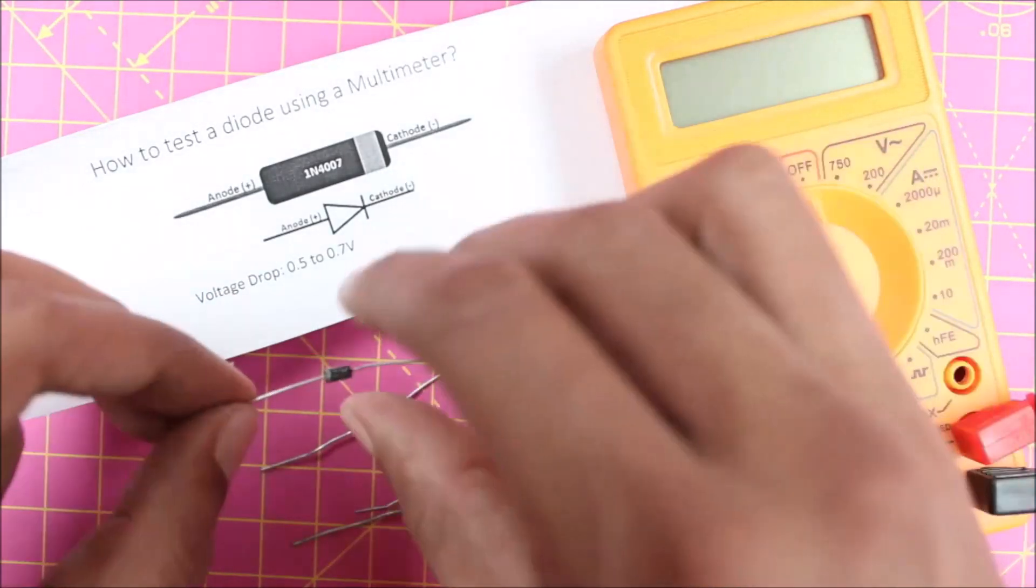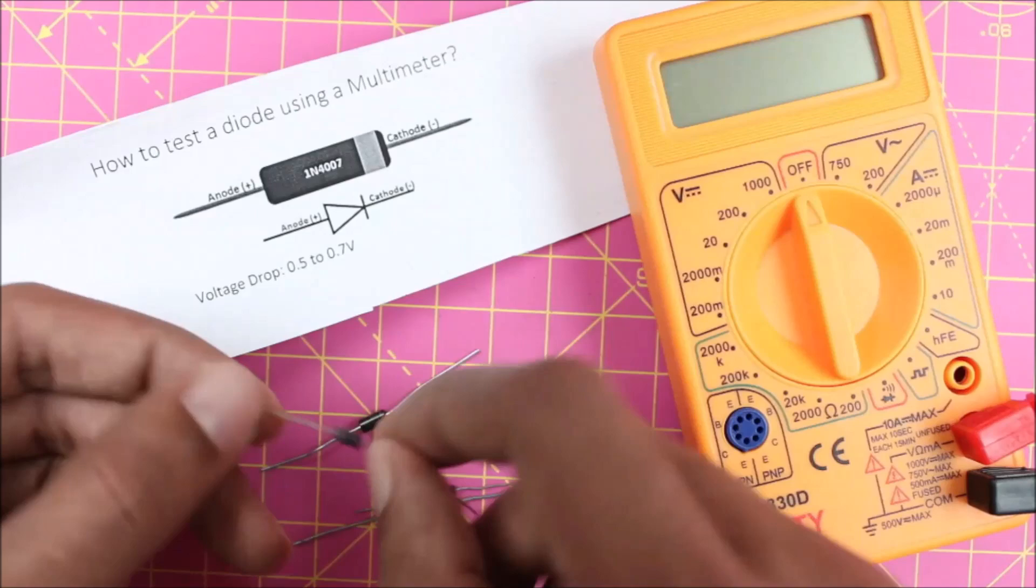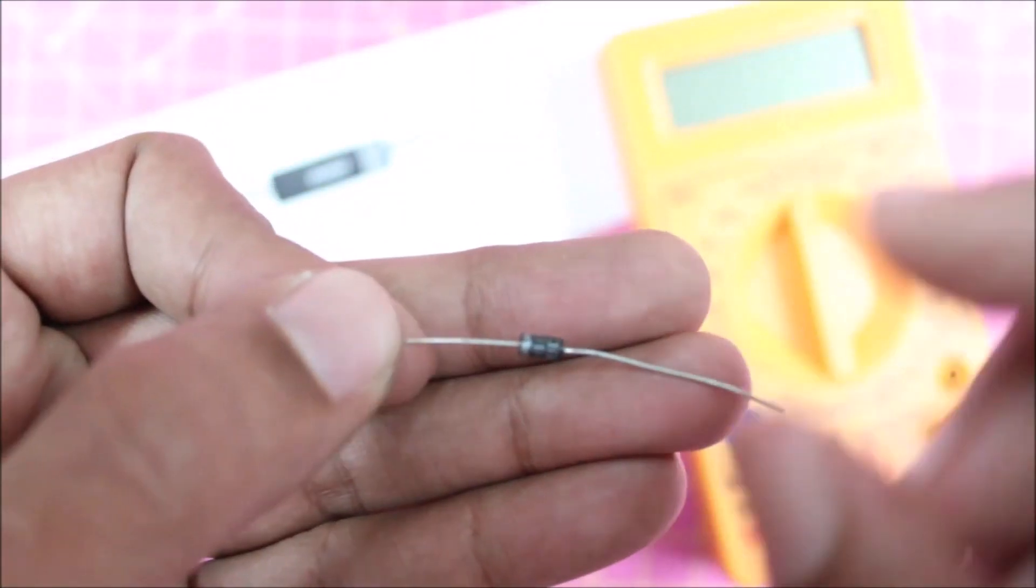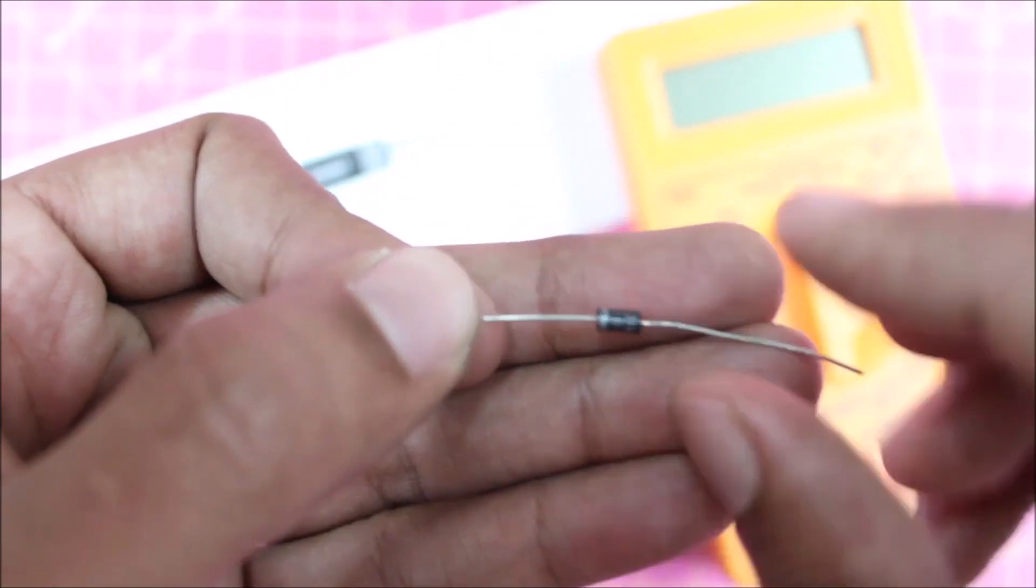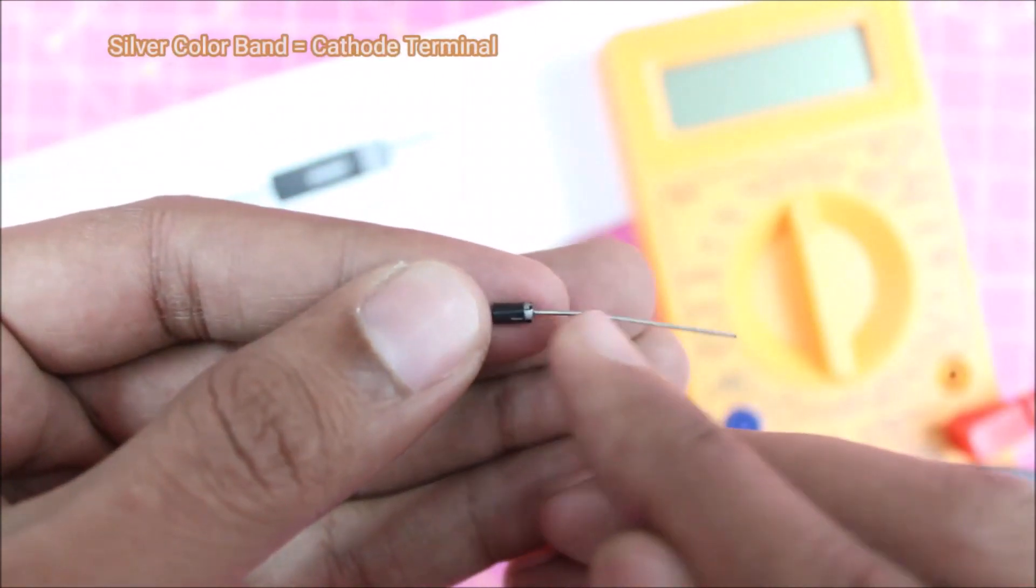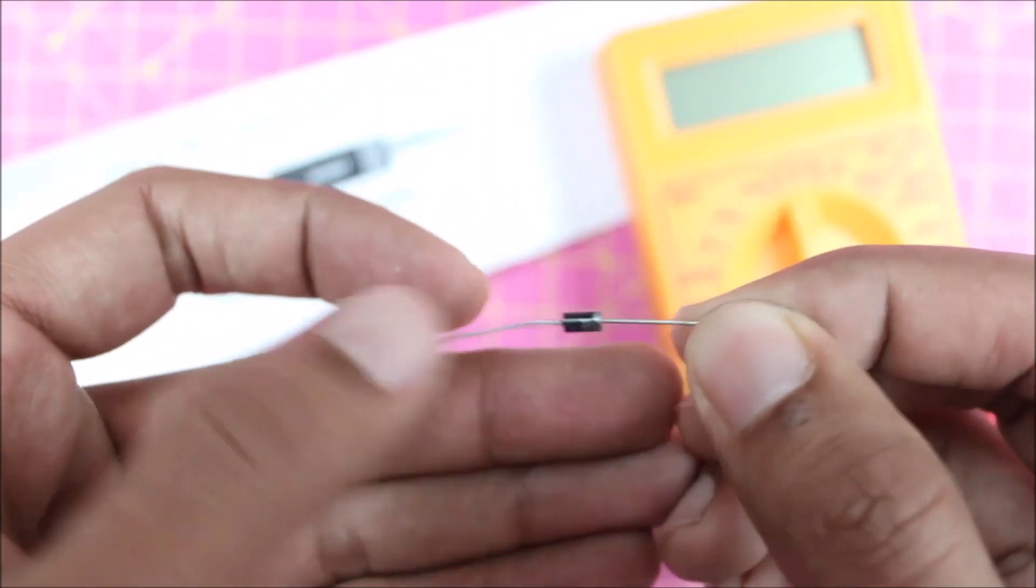Before we start with our multimeter, I will show you how to identify the terminals of a diode. Taking a closer look, you can see every diode will have a silver band. This silver band actually indicates the cathode terminal of the diode. Whenever you see a silver band, it means that terminal is the cathode terminal. The other terminal will be the anode terminal.